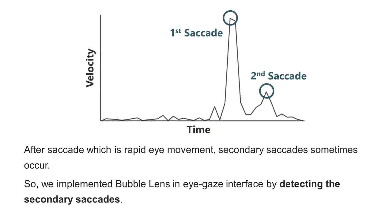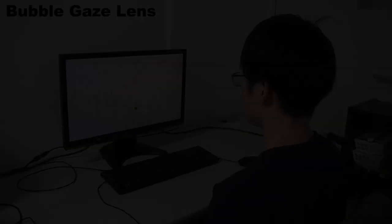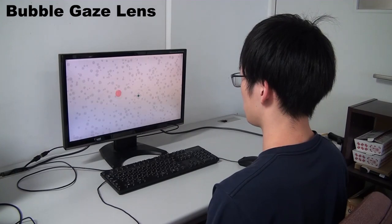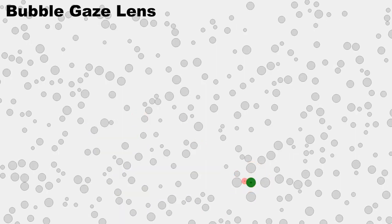After a saccade, which is a rapid eye movement, secondary saccades sometimes occur. We implemented bubble lens in the eye gaze interface by detecting these secondary saccades. This video shows a user actually using the bubble gaze lens.